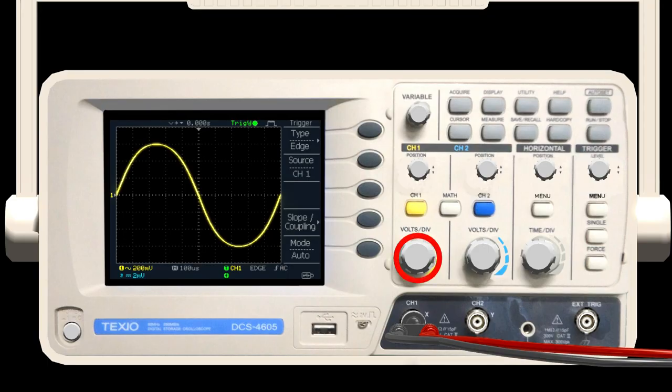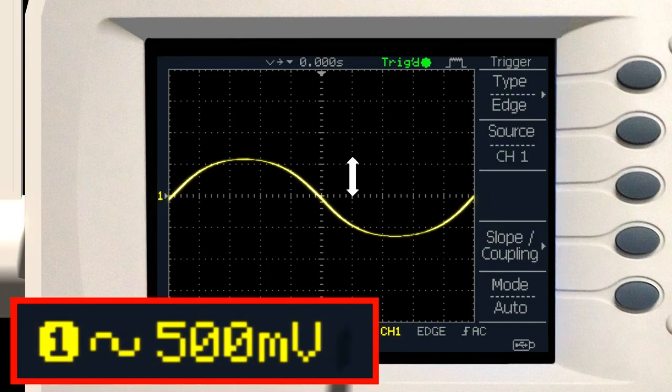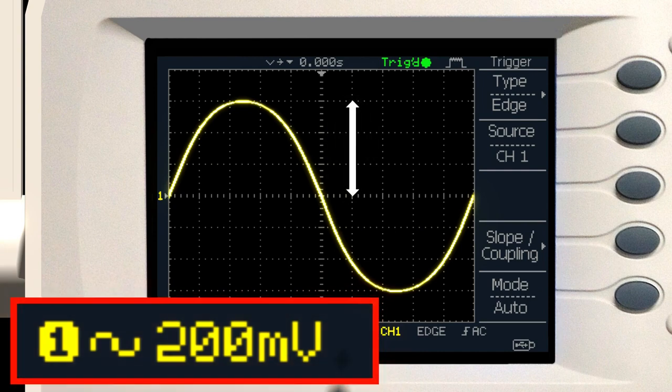The vertical axis is set by the volt division switch. It can be set separately for channel 1 and channel 2. Turning the switch to the right decreases the voltage value per division. And turning it to the left increases it. The smaller the value per square, the larger the waveform.